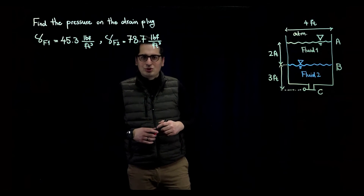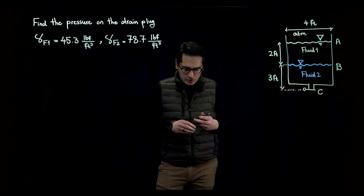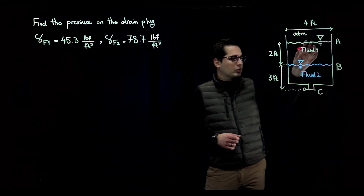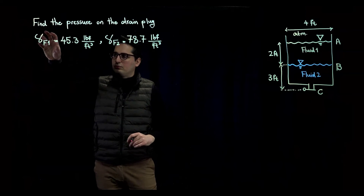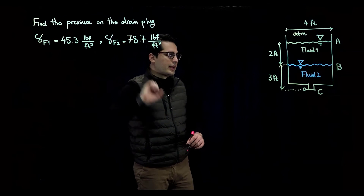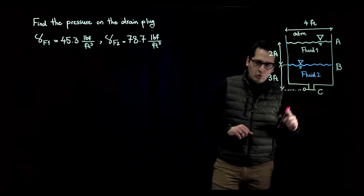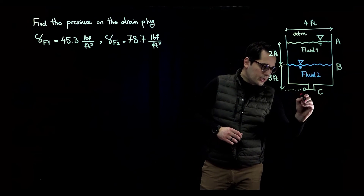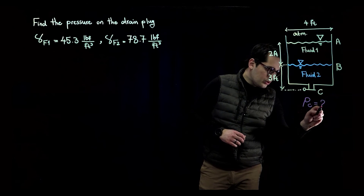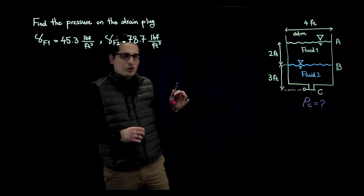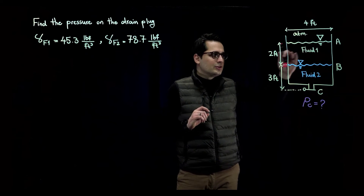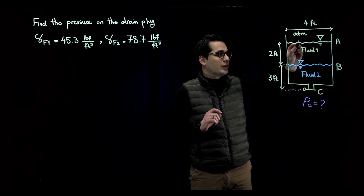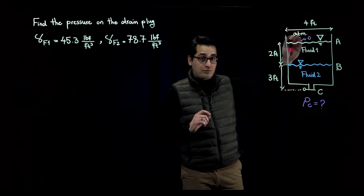Now let's work through an example to see how we can use the hydrostatic equation. We have a tank with a drain pipe and drain plug. The tank contains two fluids, with the specific weight of fluid one and fluid two both given, along with all the tank dimensions. We want to find the pressure at the drain plug at point C. Whenever you have multiple fluids, you want to write pressure terms at the interfaces. At the top interface between air and fluid one, the pressure is atmospheric, so relative pressure equals zero.